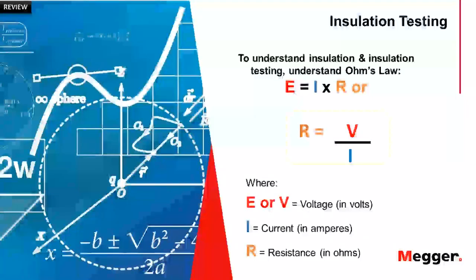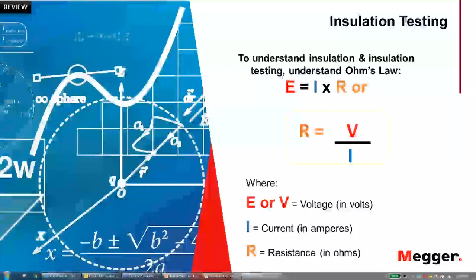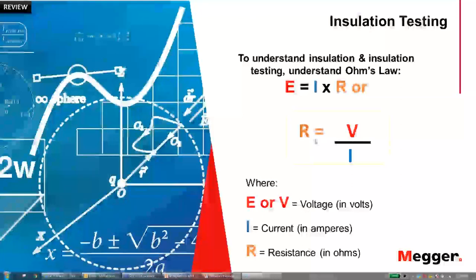To review first: DC insulation testing is based on Ohm's law. We know that voltage equals current times resistance, and since we are measuring insulation resistance, R equals voltage divided by current. So resistance is directly proportional to voltage and inversely proportional to current. Meaning, to measure higher resistance, I need a higher voltage. And if I get a high current during measurement, that means I will have a low resistance reading, because that is inversely proportional. Please take note of that.